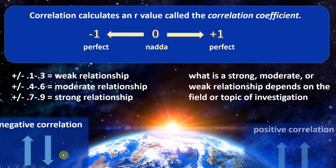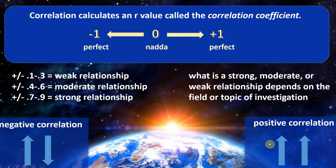A positive correlation means that X and Y are moving in the same direction: as X increases, Y increases. It's important to note this could go the other way too — as X decreases, Y decreases. What's key is that they're both moving in the same direction. For example, a good positive correlation: as you spend more time studying, your grades on a test increase. As you study more, you can expect a higher grade.